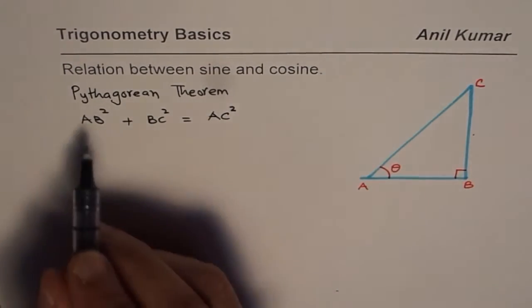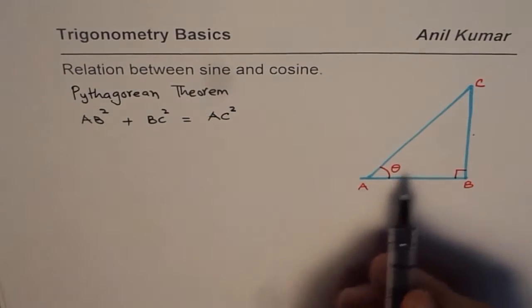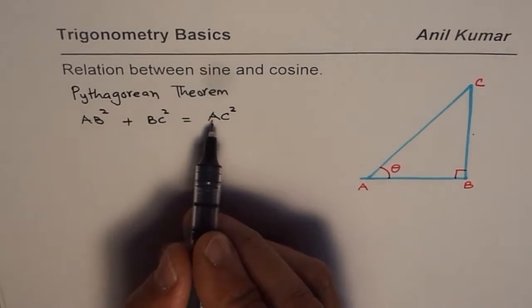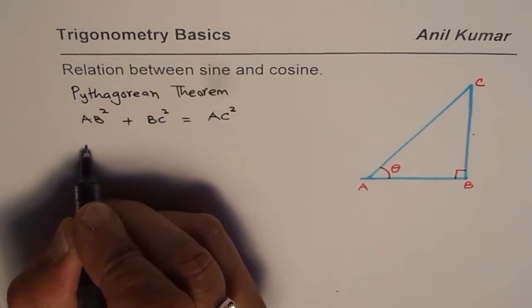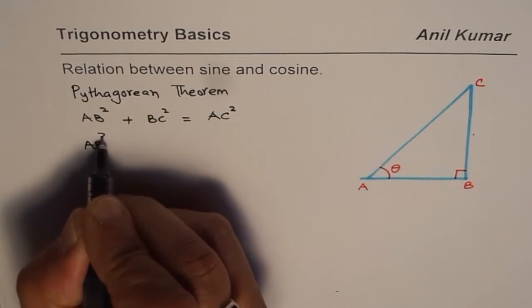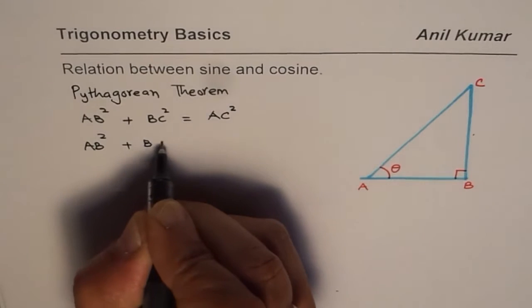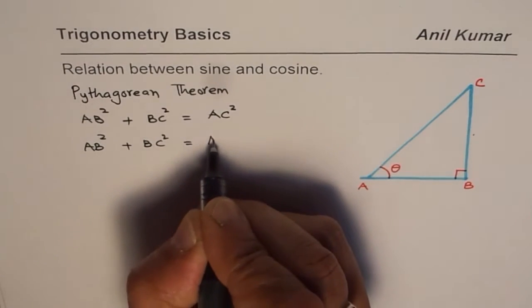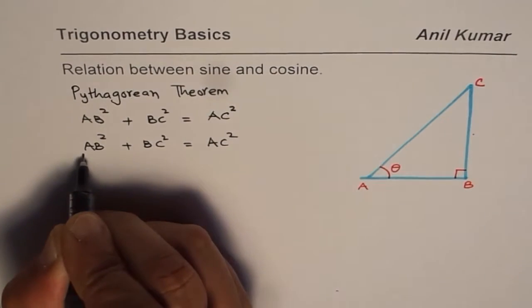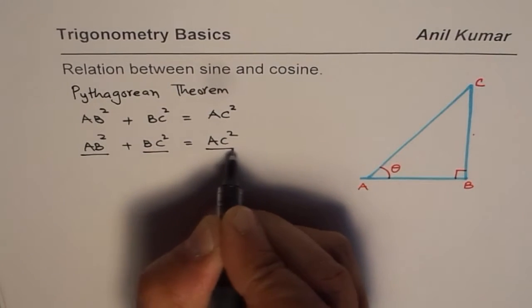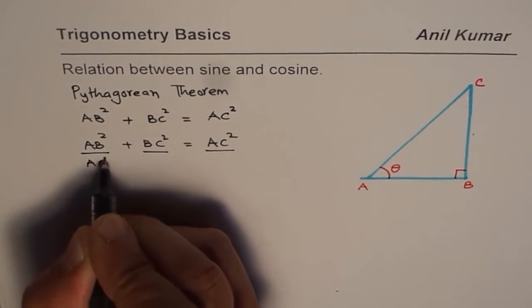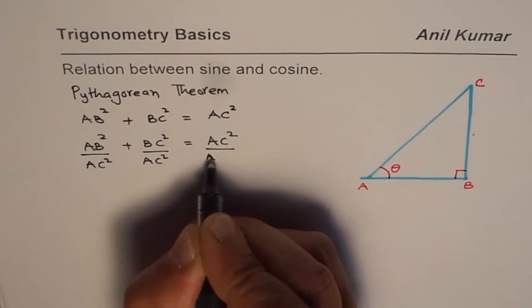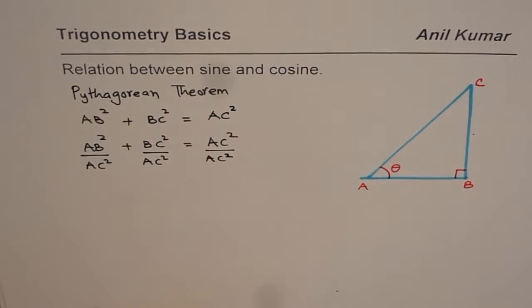Now if I divide all these sides by AC² what do I get? Let me rewrite this. We have AB² plus BC² equals AC². We are dividing each term with AC².